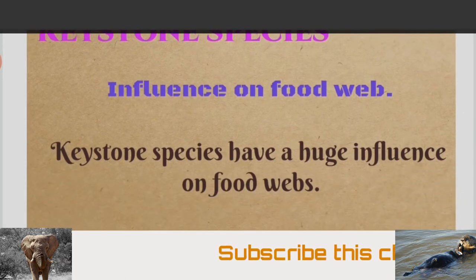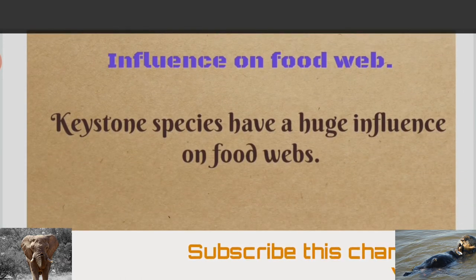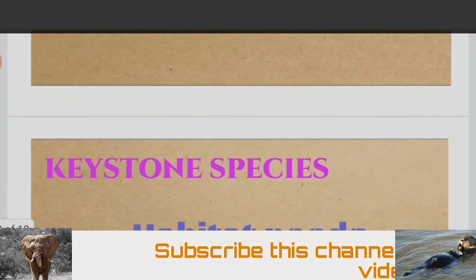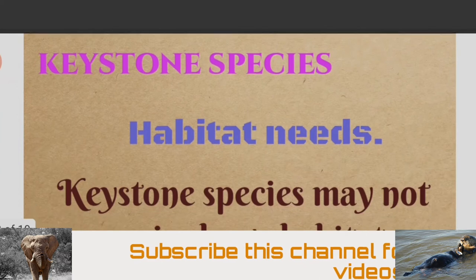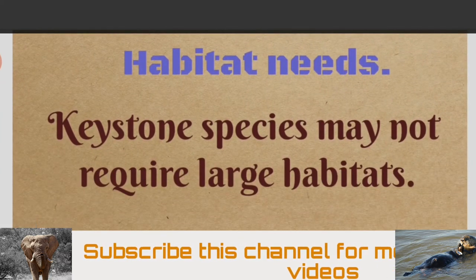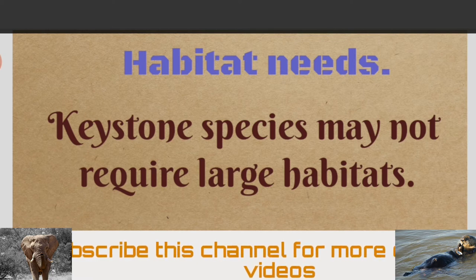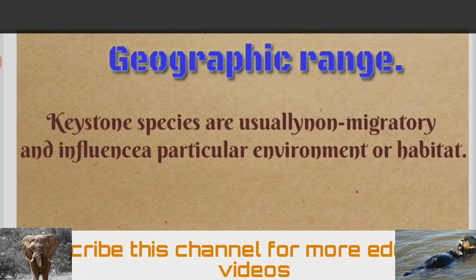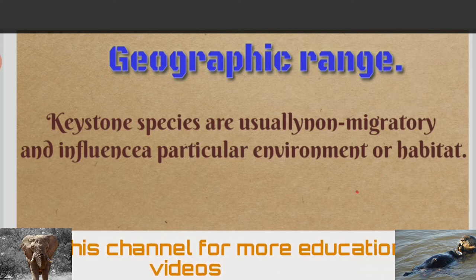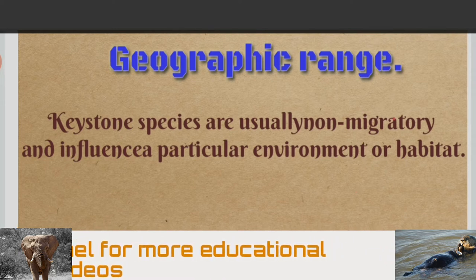Keystone species usually have a huge influence on the food web. Despite not being abundant, they play a very important role in an ecosystem. They may not require large habitats and remain confined to the ecosystem where they stay. Keystone species are usually non-migratory and influence a particular environment or habitat.